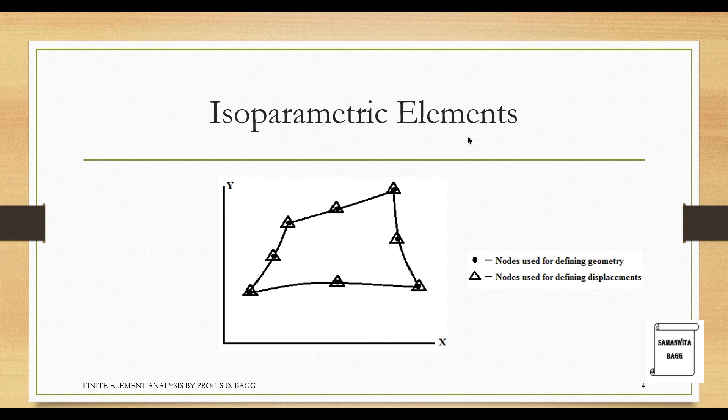So this is called as isoparametric element, where the number of nodes defining the geometry will be equal to the number of nodes defining the displacement. It is not necessary always displacement, it could be displacement, temperature or any other field variable.